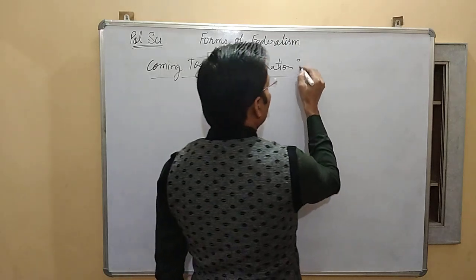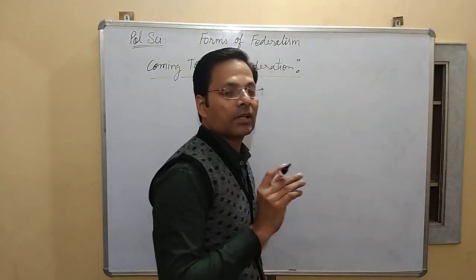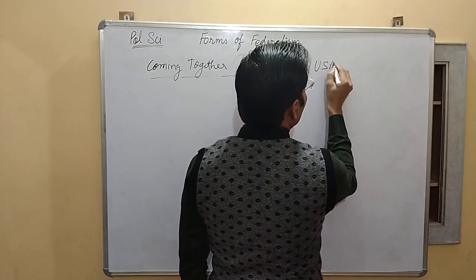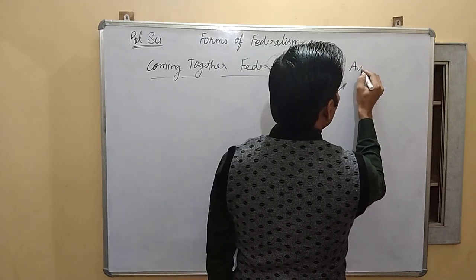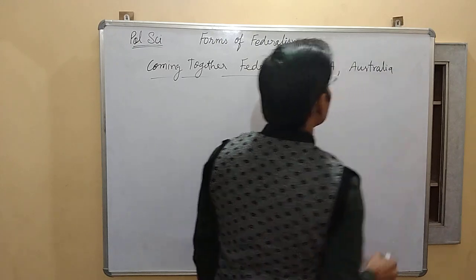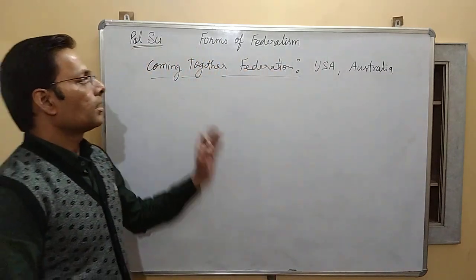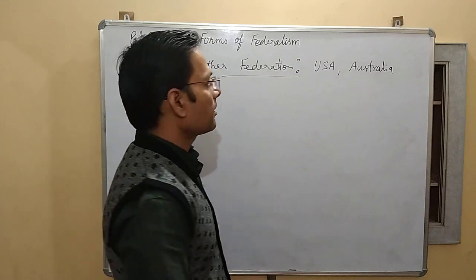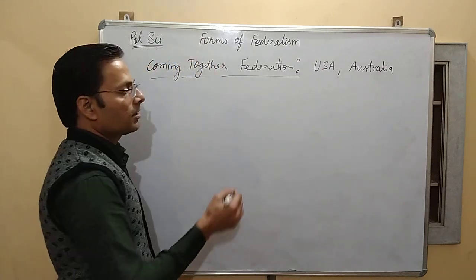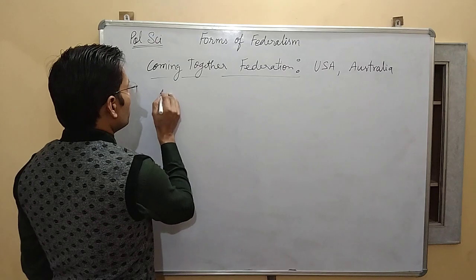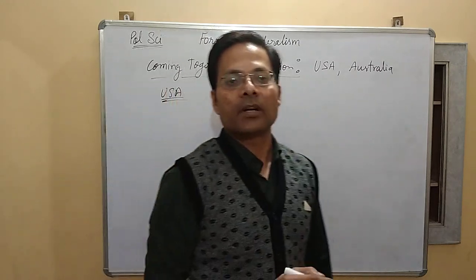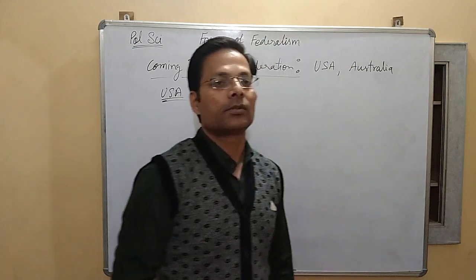In coming together federation, we can have the example of USA and Australia. These countries are practicing coming together federation. There are many more examples, but here I am taking the example of USA to explain what happened. After becoming independent from English rule, you know that Britain had made America a colony.